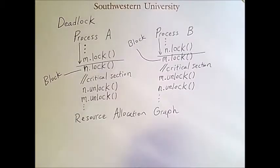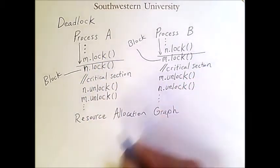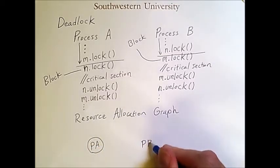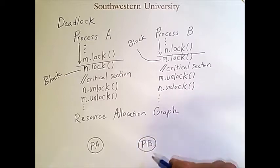In a resource allocation graph, we represent processes using circles. So we have process A in a circle and process B in a circle. And we represent resources with squares.